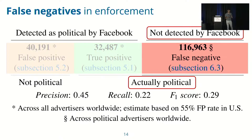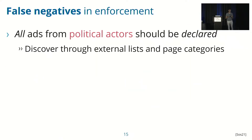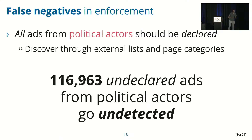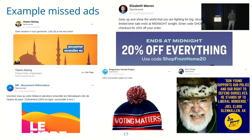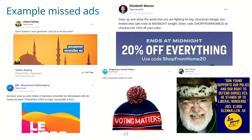Moving to the false negatives: these are ads that were not declared by the advertiser and that Facebook did not detect — they did not retroactively label them as political, but according to our analysis they actually are. We used a statement in Facebook's definition that all ads from clearly political actors should be declared. We discovered these actors through external lists of known political Facebook pages and the self-declared category of each page, selecting categories such as politician or political party. We found a lower bound of almost 117,000 ads that were not declared by the advertiser — where the advertiser was a clear political actor — and still went undetected. These were ads from major political parties and major political candidates, usually with a very clear political message.